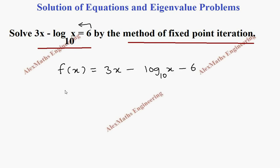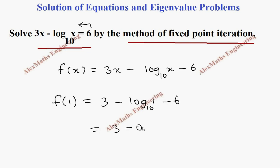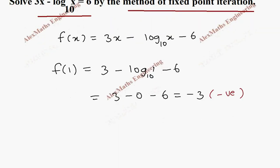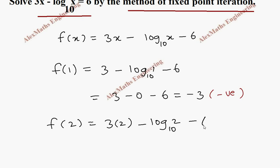I'm going to find two values of x so that f of x changes its sign. We cannot take 0 because log 0 is not defined, so we start from 1. f of 1 is 3 into 1 minus log 1, and log 1 is 0 for any base, so this gives 3 minus 0 minus 6, which is minus 3, a negative value. Now let's find f of 2, which is 3 into 2 minus log 2 base 10 minus 6.